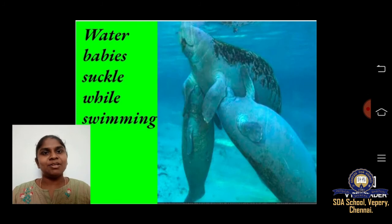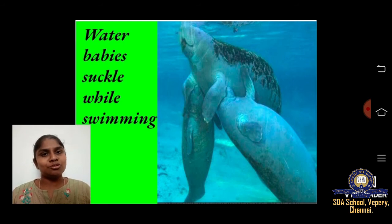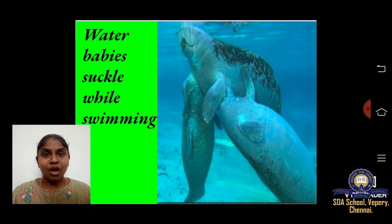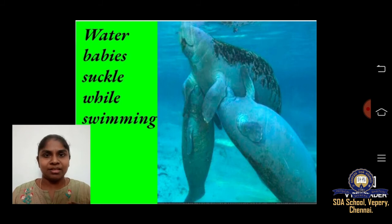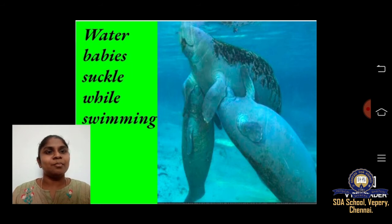Next, we are going to learn about water babies. Many mammals live on land, but water animals also feed their younger ones. Water babies suckle while swimming — suckle means they take the feed from their mother. They drink milk while swimming in the water. Look at this picture — this is a sea cow, and the younger one is being fed by its mother.